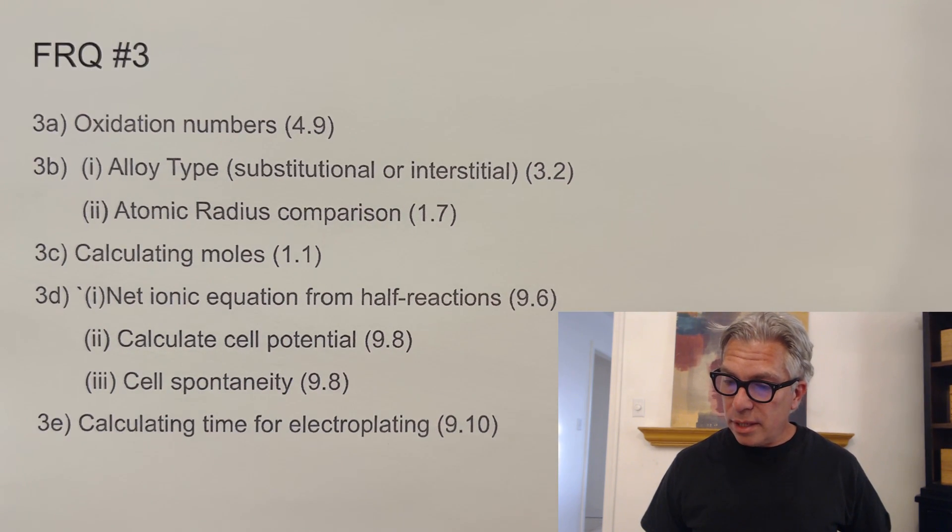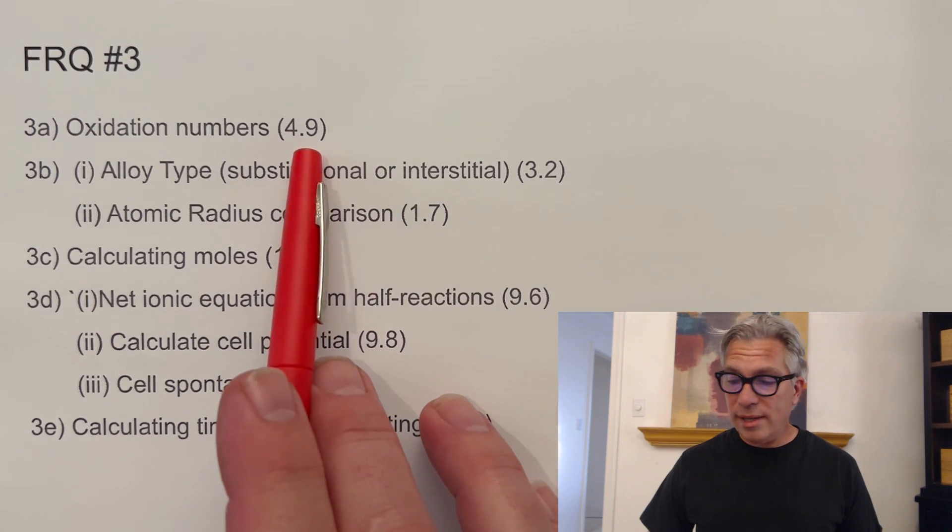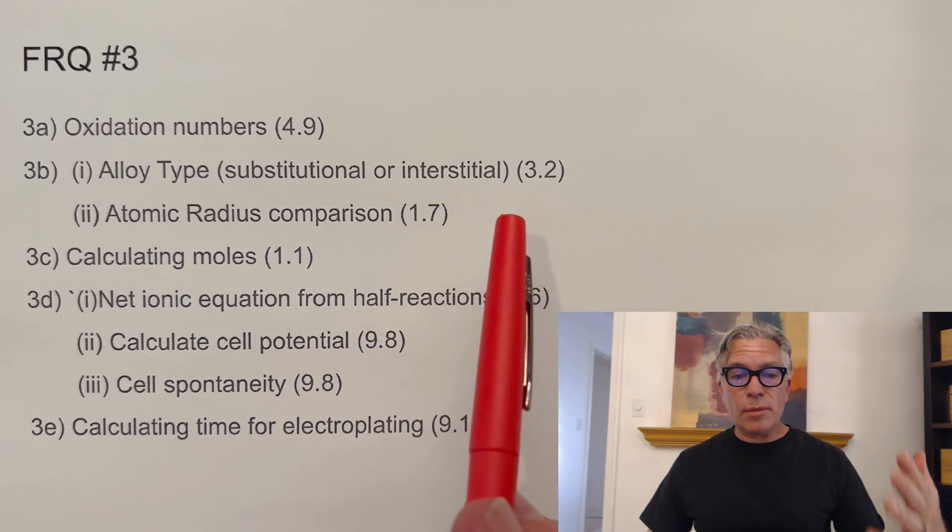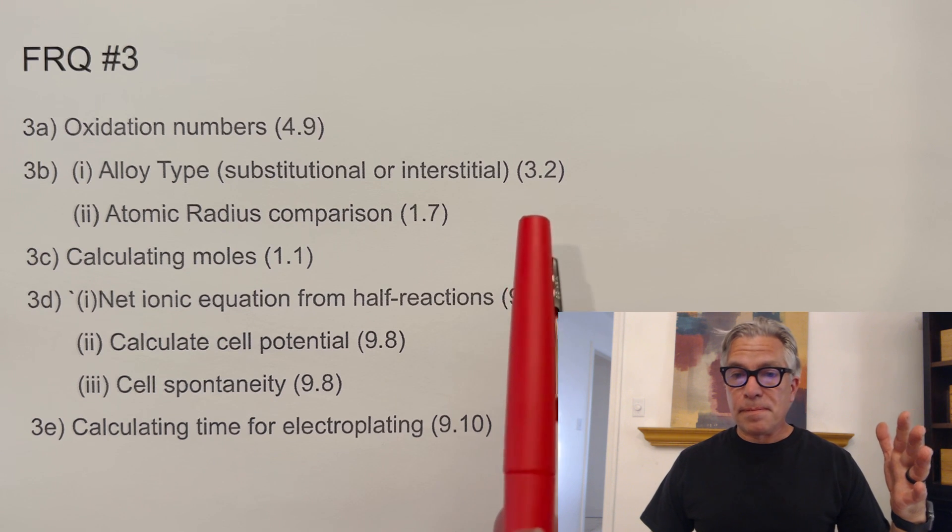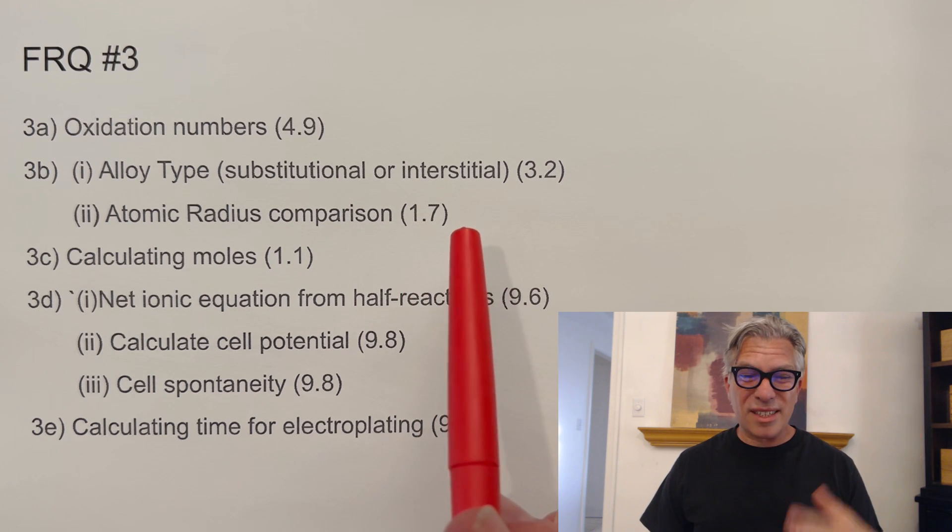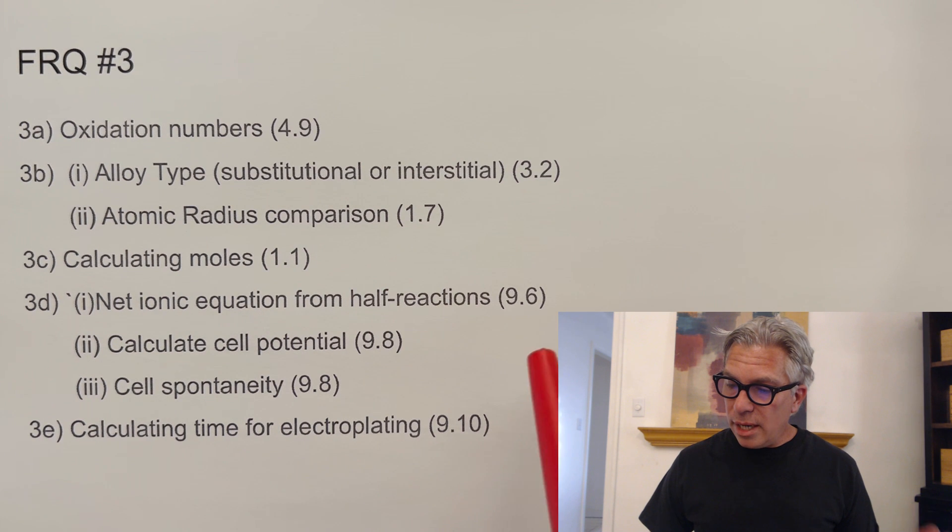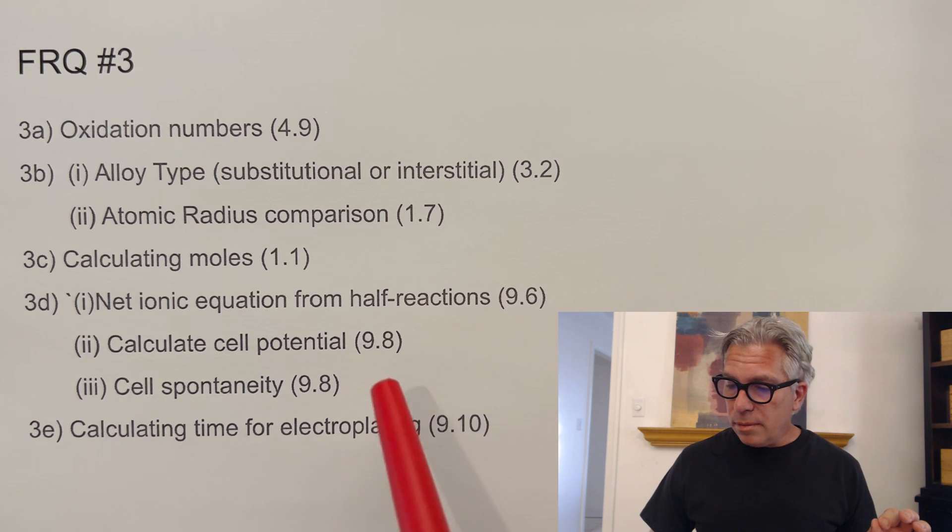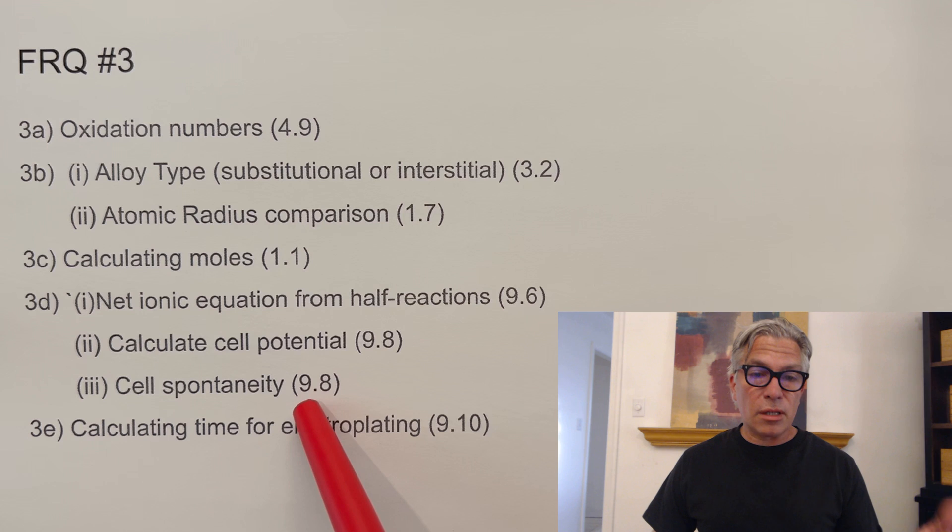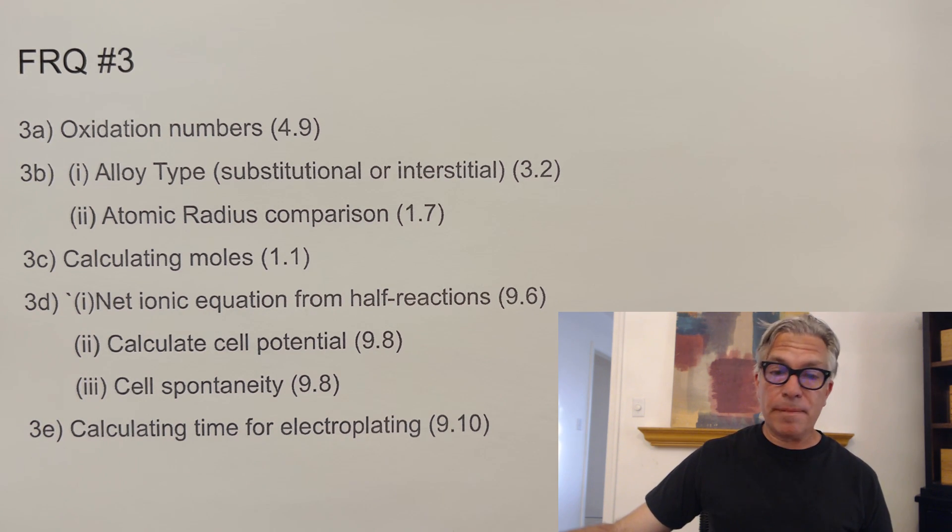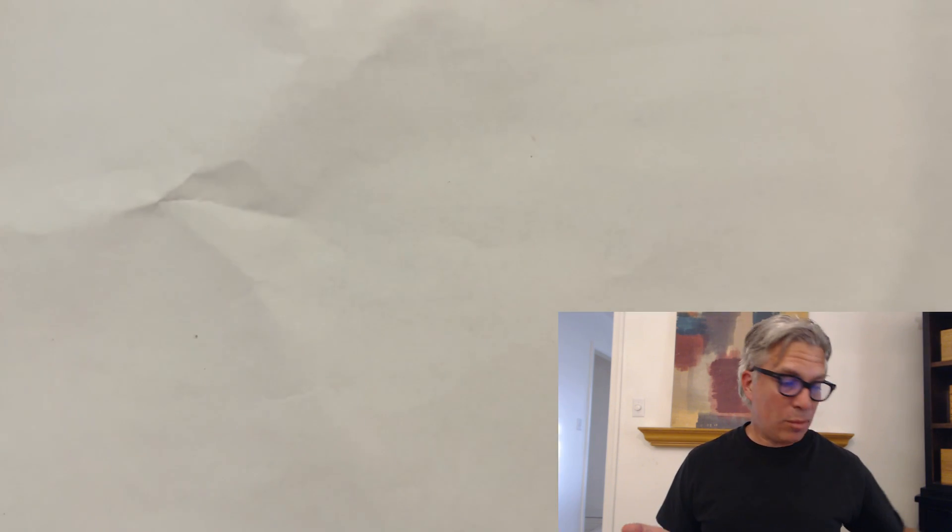And in FRQ number three, so we start with oxidation numbers. That's unit 4.9 on chemical reactions. Here's another unit 3, alloy types. And what I'm trying to show here is that yes, the intermolecular forces is the title of the unit, but there's also other things in there. So let's just keep that in mind. Atomic radius comparison, calculating moles, net ionic equation, and half reactions. That's sort of our last unit on galvanic cells and things. Calculating cell potential and cell spontaneity. This turned out to be an electrolytic cell, which is totally fine. And they had us calculated time to electroplate a certain amount of rhodium, which was pretty awesome. Don't often see rhodium, which is kind of nice.